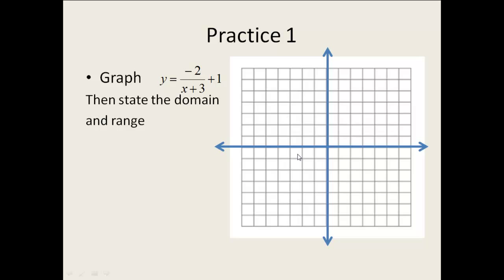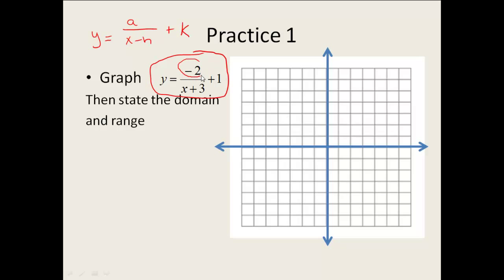Here's our first crack at graphing — we're going to graph this equation and then state the domain and range. We want to first identify which setup this is. It matches the y equals a divided by x minus h, plus k setup. Our a is negative 2, our k is the plus 1, and our h is right down in our denominator. Since a is negative — less than 0 — that tells us we're going to be primarily in quadrants 2 and 4.